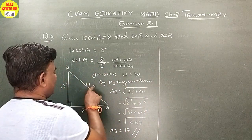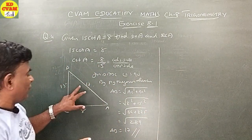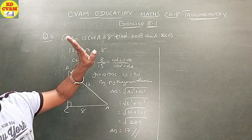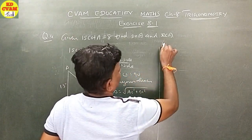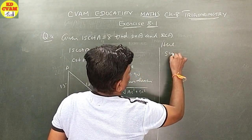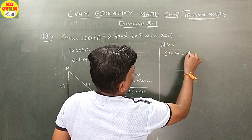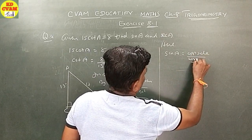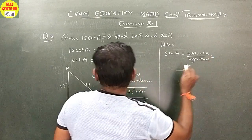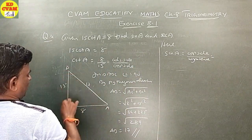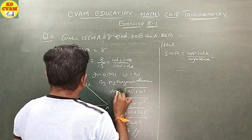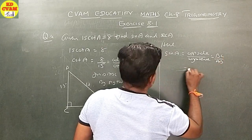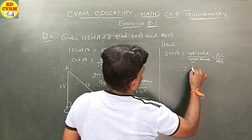Now, once you complete the triangle, you can find anything. Sin A is equal to opposite side upon hypotenuse, which equals BC upon AB. That is, 15 upon 17.